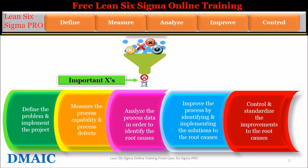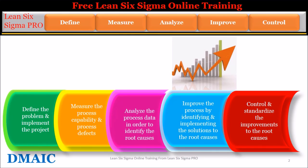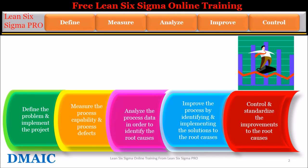Analyze is the third step of the DMAIC process. In this phase, we analyze the process data in order to identify the root causes, also called Xs, and their impact on the output, Y. Improve is the fourth step. In this phase, we improve the process by identifying and implementing the solutions to the root causes at the gemba. Control is the fifth and last step. In this phase, we control and standardize the improvements to the root causes.